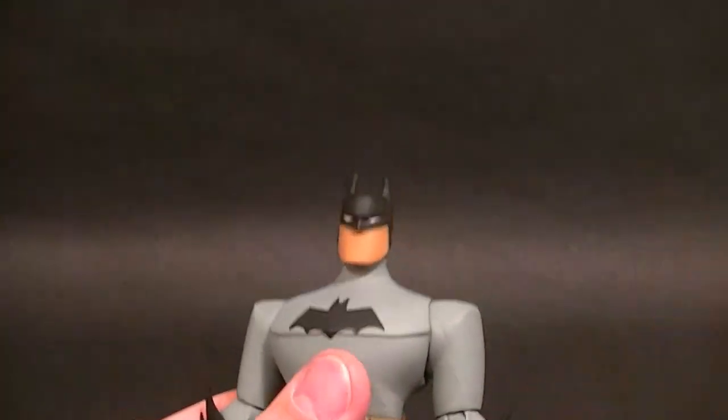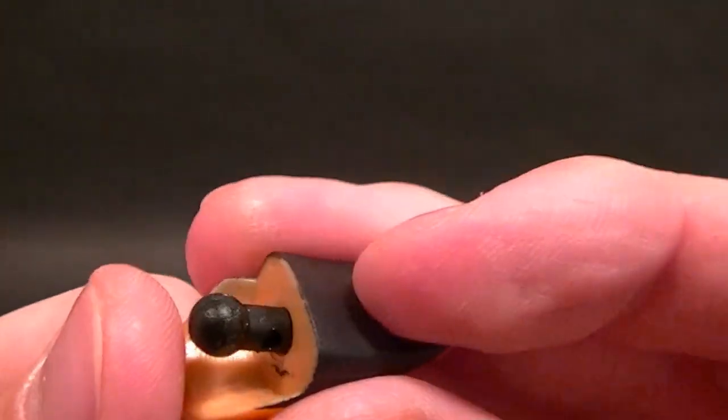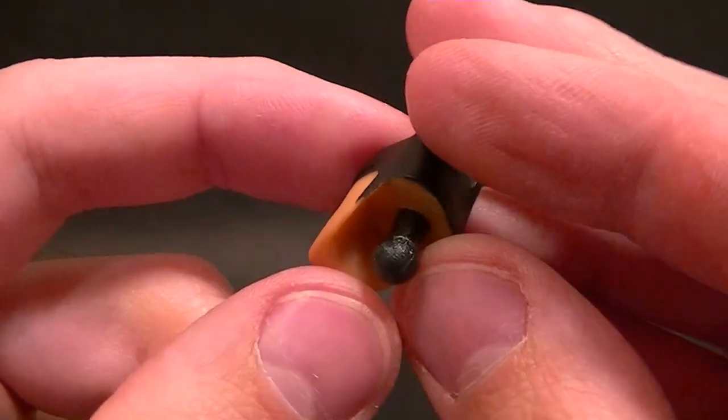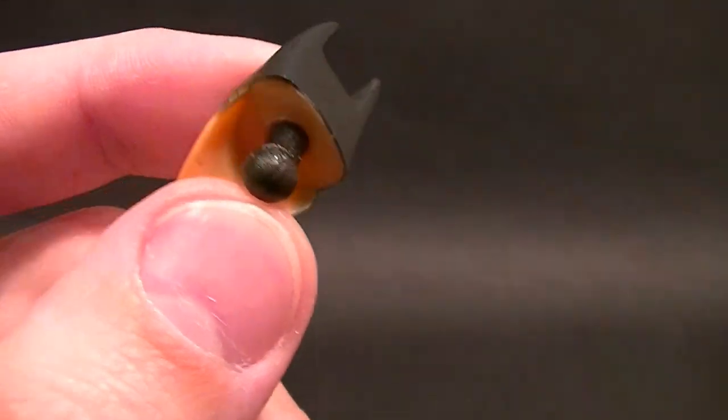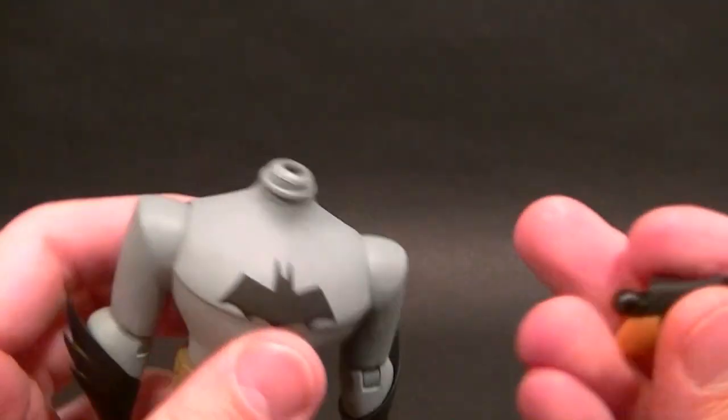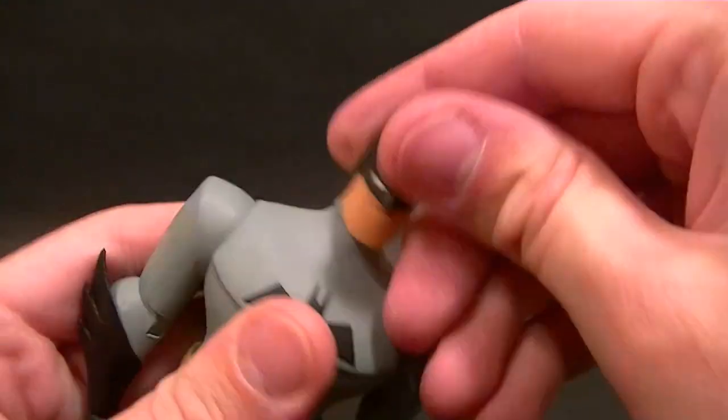Let's talk about the articulation now. The head as you saw is removable so you can swap out the capes. It has a single ball peg, this is definitely a missed opportunity for a double ball peg. Obviously it would have been nice to have another ball peg in the top of the head, it's not a huge deal, it's just something to note.